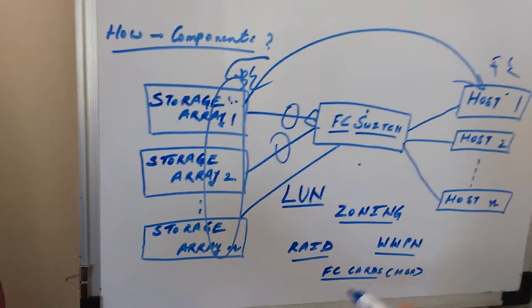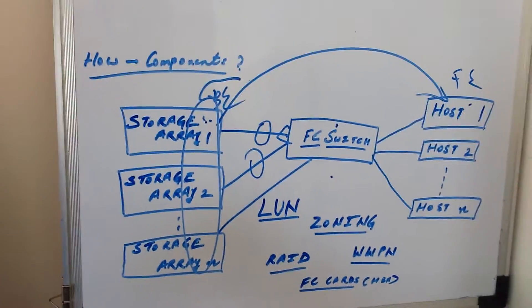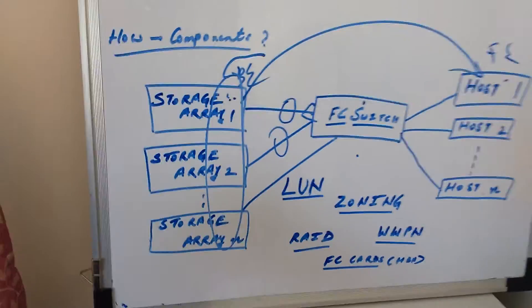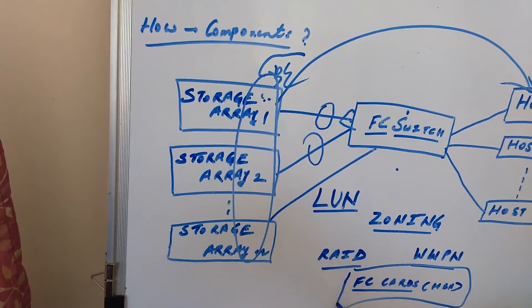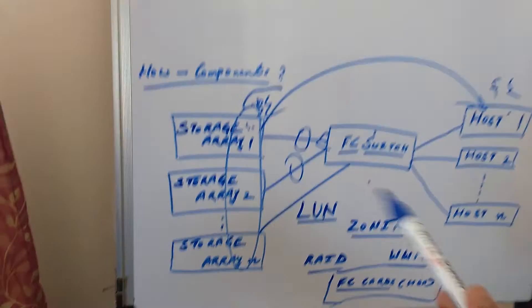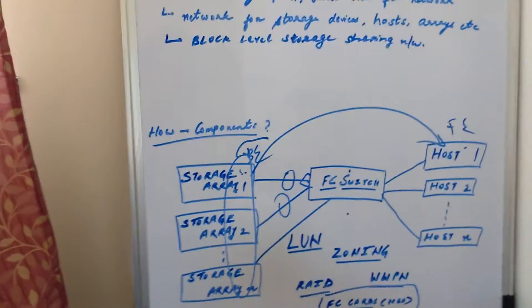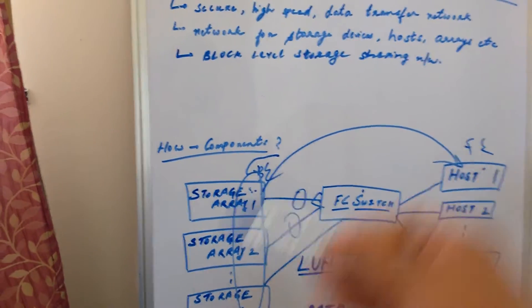Then at the host side, we have FC cards. Like in computers we have graphic cards, and in networking we have CNA cards, similarly in hosts we have FC cards. These FC cards manipulate this data in the SAN environment. With this, the storage block can be accessed by multiple hosts in this SAN environment.